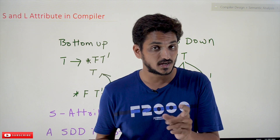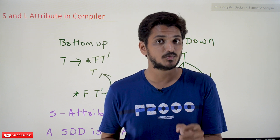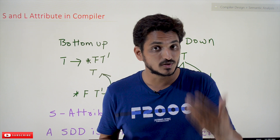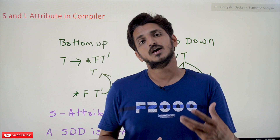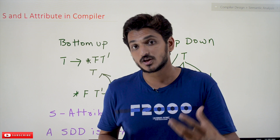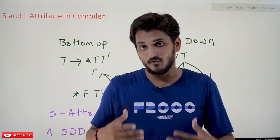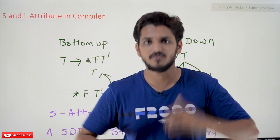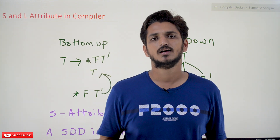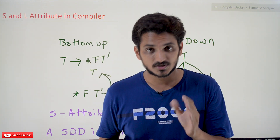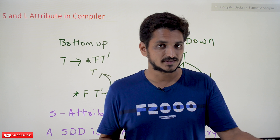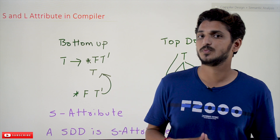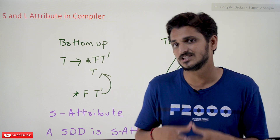In our last class, we clearly discussed about dependency graph and the failure case of dependency graph — when we are not going to evaluate the attributes during the context-free grammar evaluation. This is a continuation class, so please watch that class and come back here. The link for the playlist is provided in the description below.